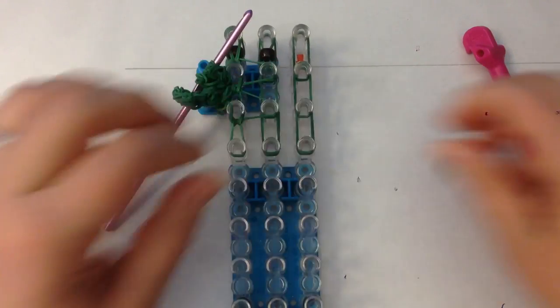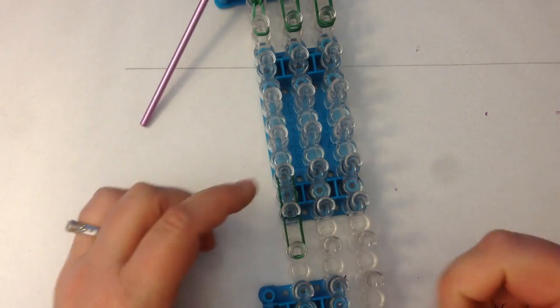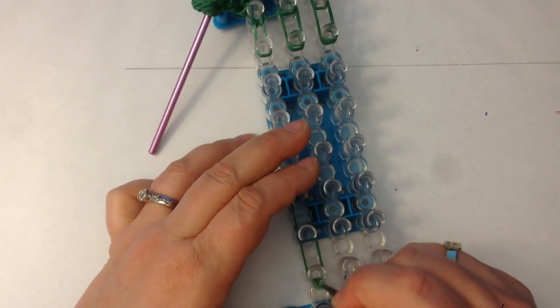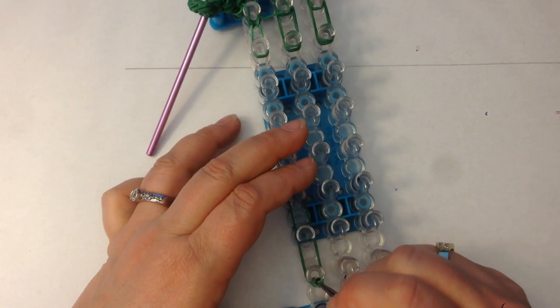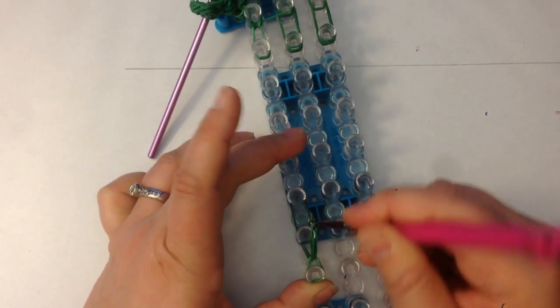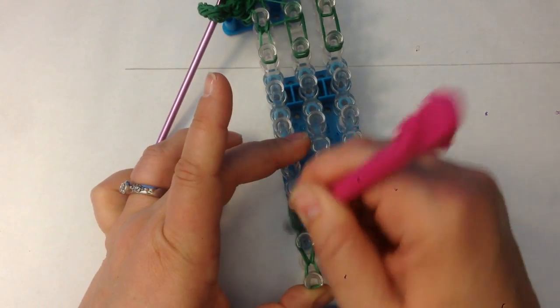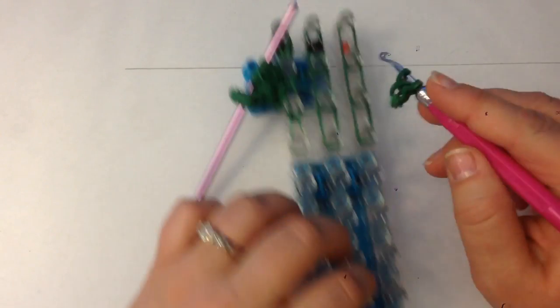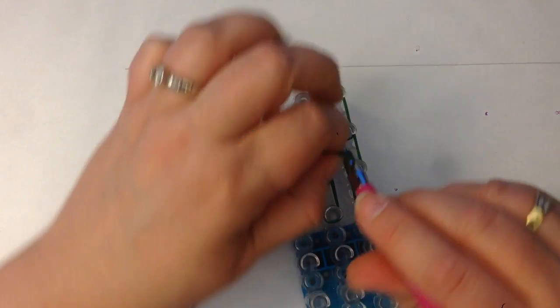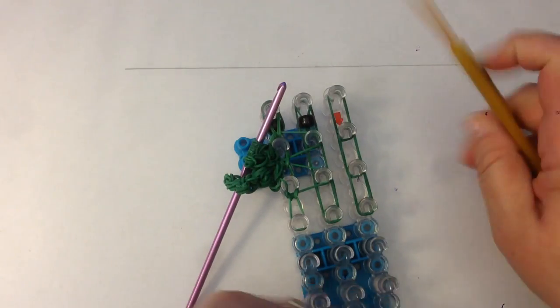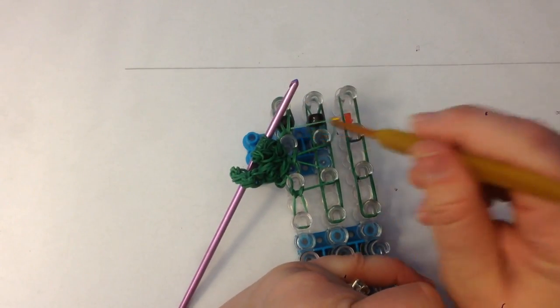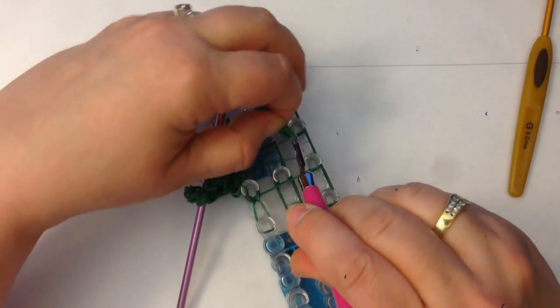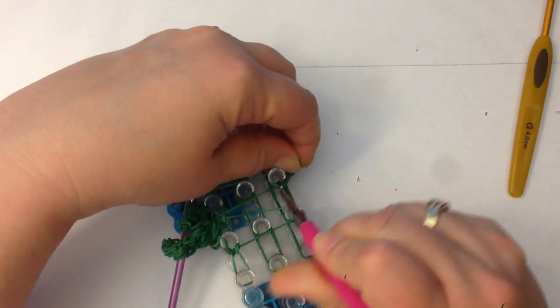Now if you remember our little arm down here, it needs to get loomed up and placed on this peg here. But first I'm going to pull my crossover band over. So pull my crossover bands over. Then I'm going to place this little arm like that.